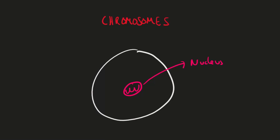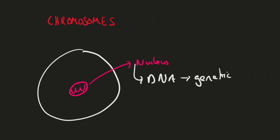Within a cell you tend to have a structure called the nucleus, and within the nucleus you have DNA. DNA is basically the genetic material that's in the middle of the cell.